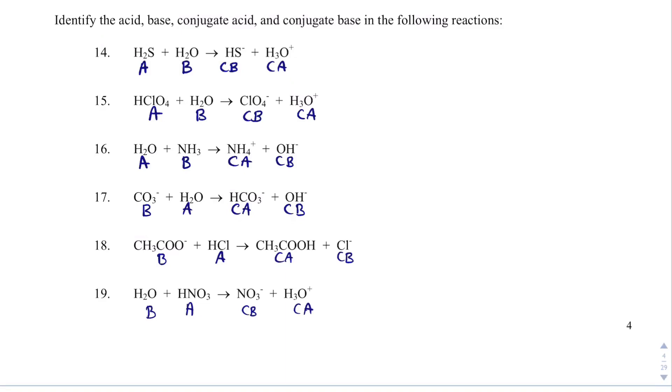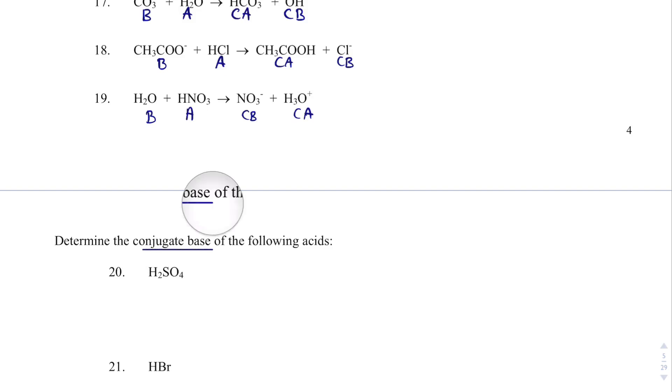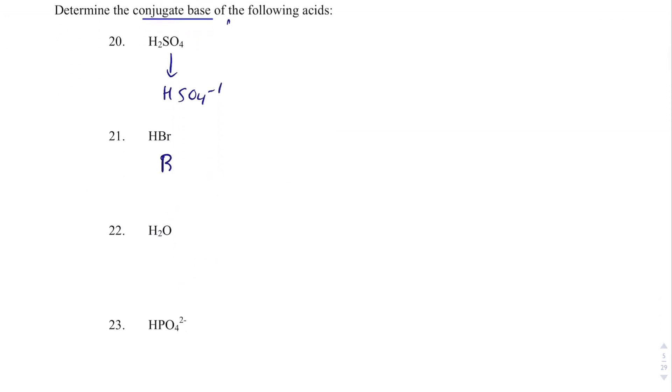And you can abbreviate acid A and base B. Essentially, acid loses H plus and then it turns into the conjugate base. Base gains H plus and turns into conjugate acid. So, if we want a conjugate base from these acids, if we look at what happens with an acid, this is an acid and it turns into the conjugate base. So, it essentially loses an H plus. So, we get HSO4 minus 1. We get Br minus 1. We get OH minus 1. And, we get PO4 minus 3.